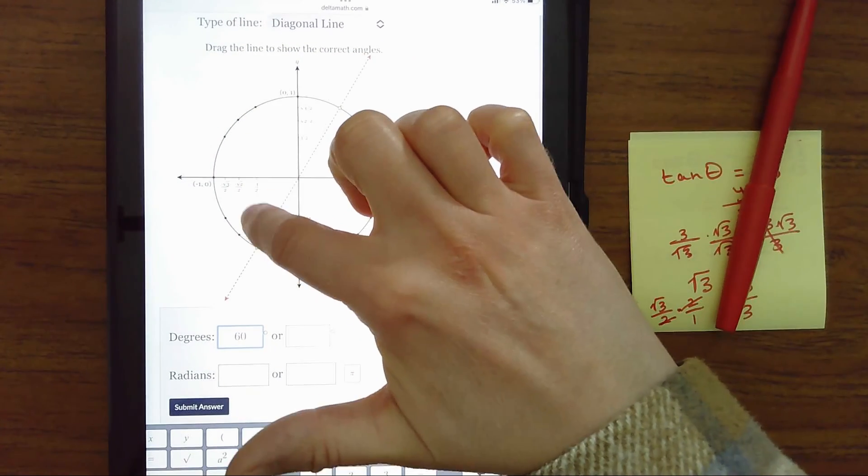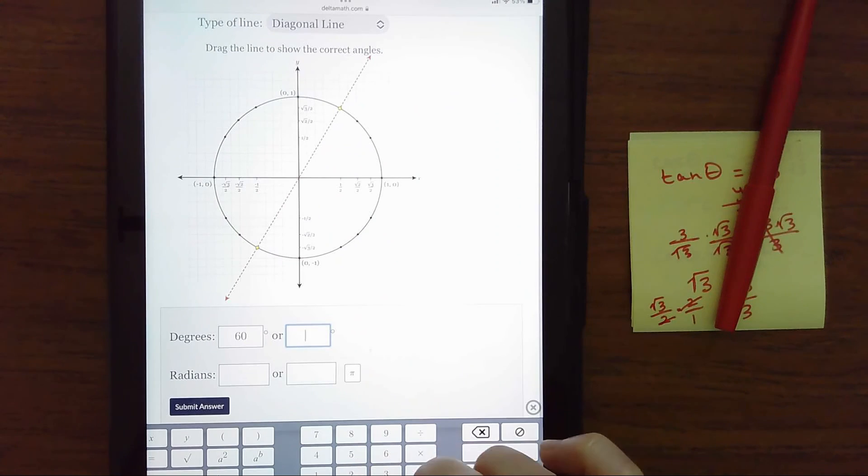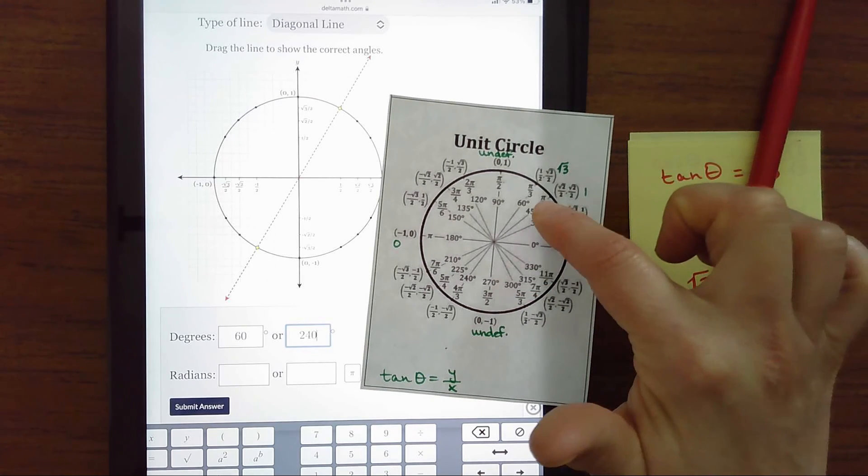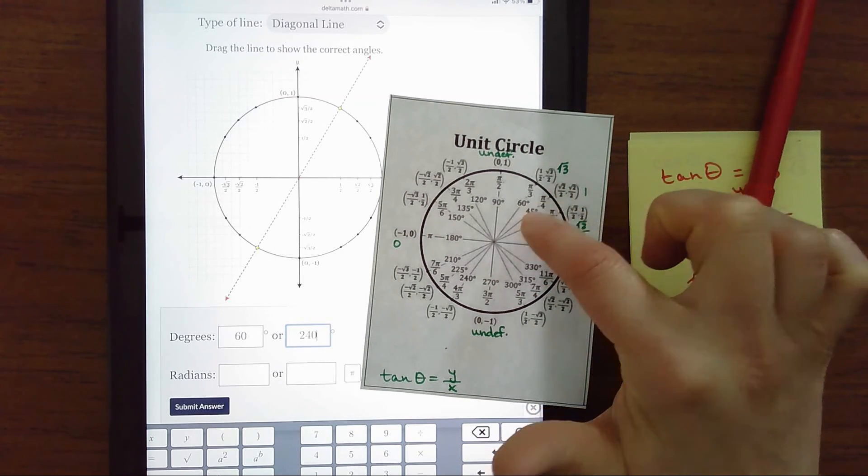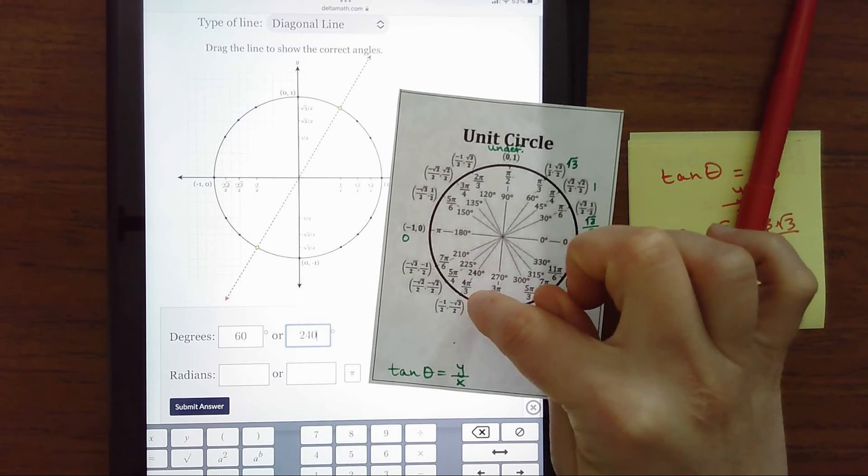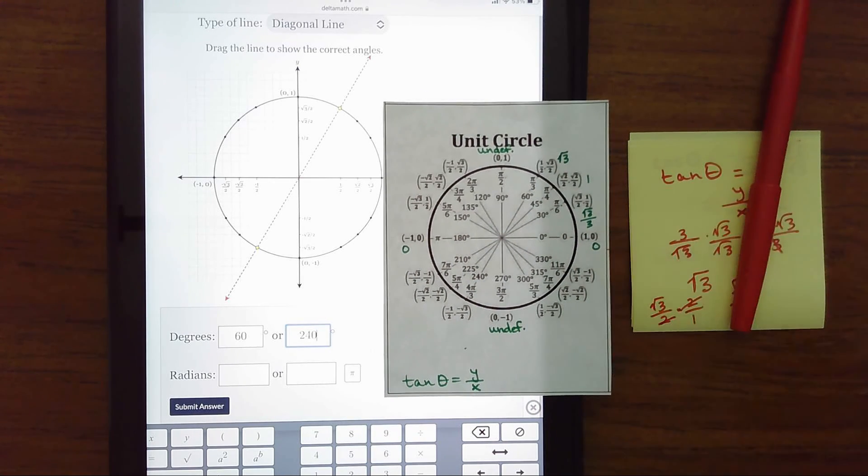And so a 60 degree reference here would be 180 plus 60, which would be 240. And then again, you can use your unit circle if you want to look at the radians. 60 degrees is a third of 180. So pi over three or four pi over three would be your two answers.